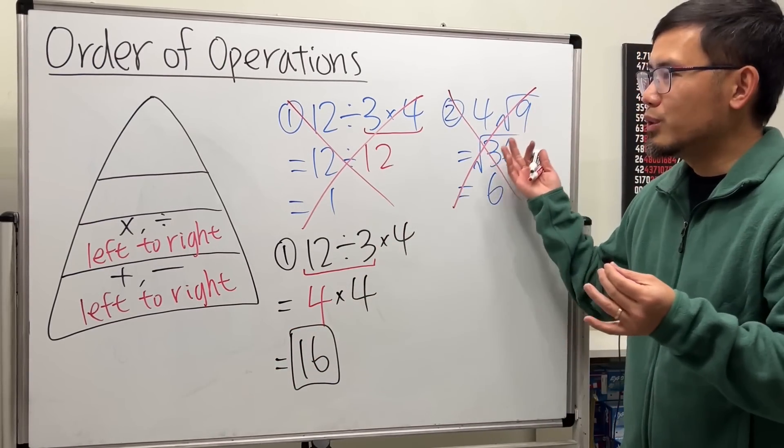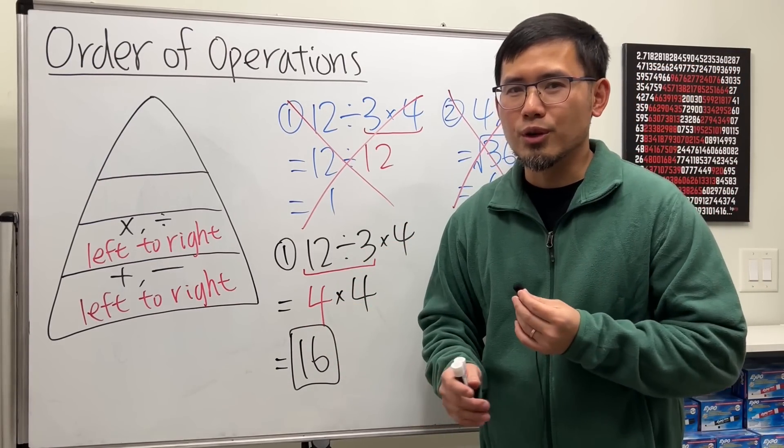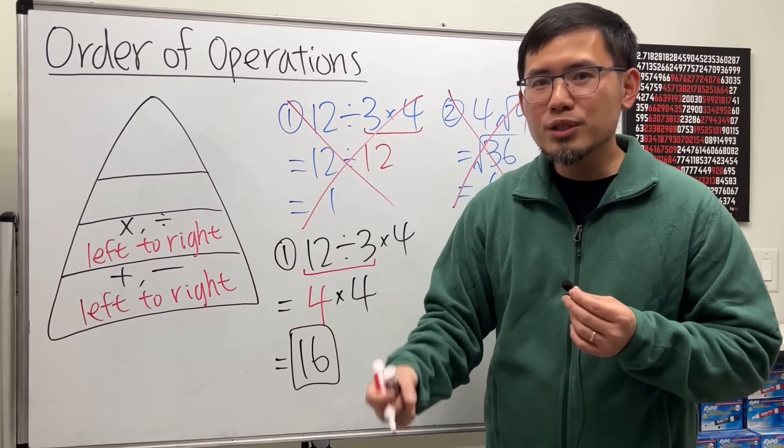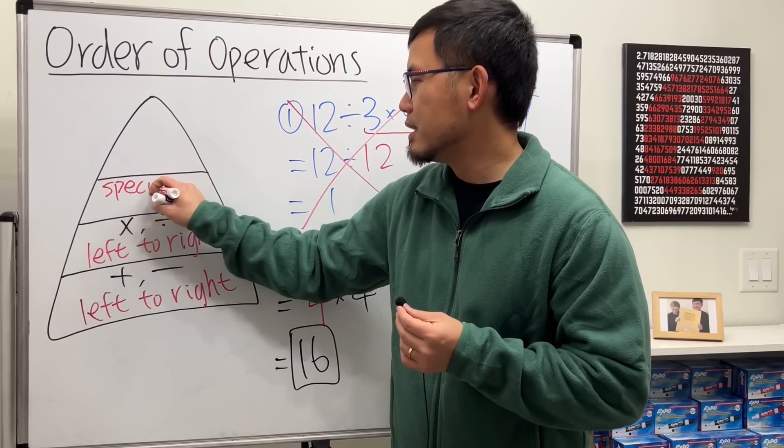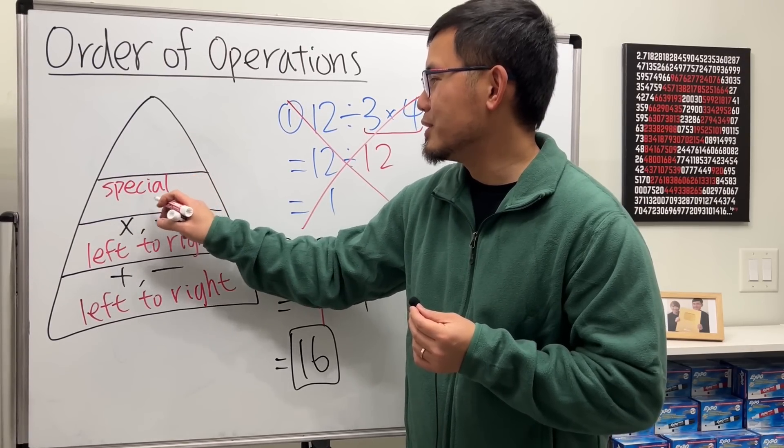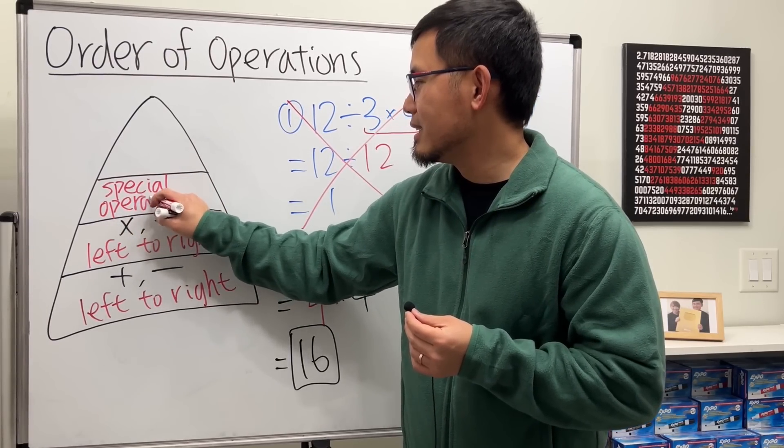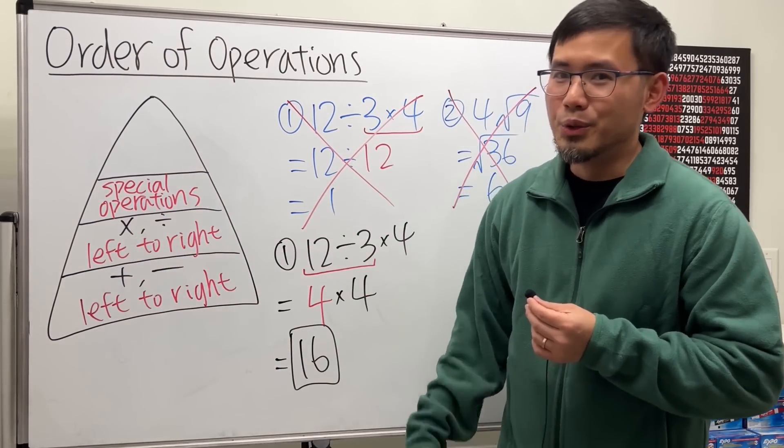Now, square root, exponents, and later on in algebra you also talk about the log function—they belong to here. I'm just going to call them special operations. Anything else besides these 4, you do them first.